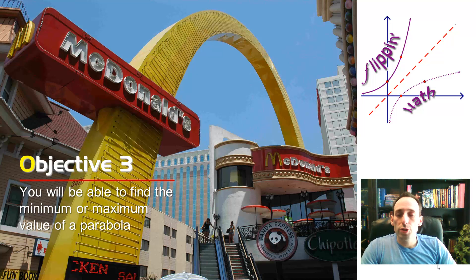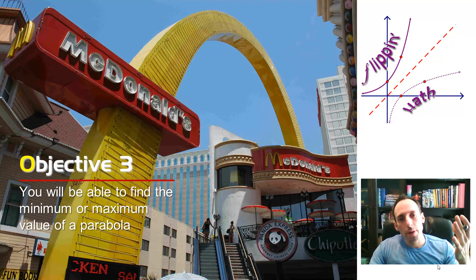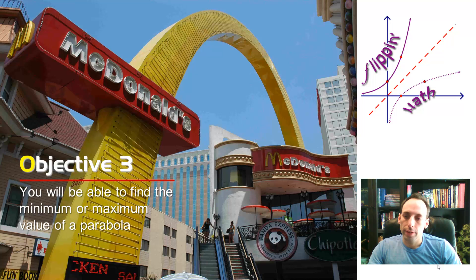Objective 3 is brought to us by McDonald's. I don't know if I approve of that. Anyway, in our third objective, which is definitely the shortest so far, we're going to be able to find the minimum or maximum value of a parabola.